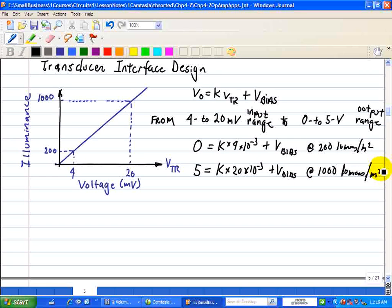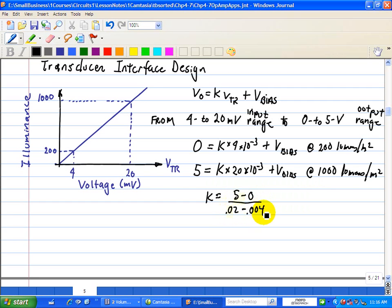Now, we have two equations and two unknowns. One to calculate the amplification, K, and the other to calculate V bias, or the level shifting value. When you do this, we can find that K is basically equal to 5 minus 0 divided by 0.02 millivolts minus 4 millivolts. And we get an amplification of 312.5.